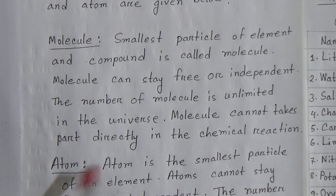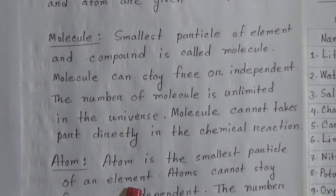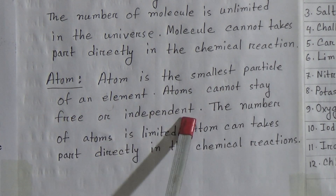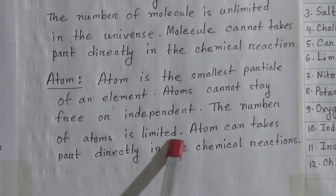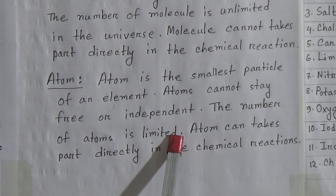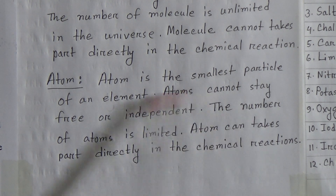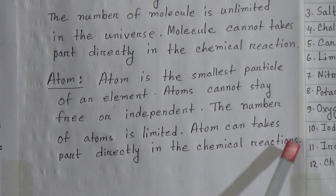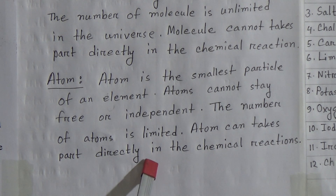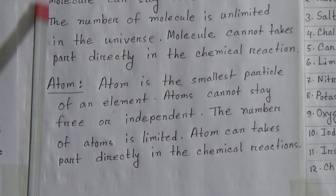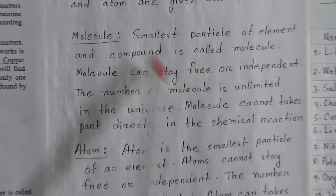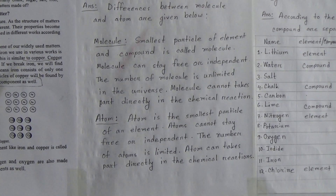For atom: atom is the smallest particle of an element. Atoms cannot stay free or independent. The number of atoms is limited, because elements are limited, so the number of atoms is also limited. Atom can take part directly in the chemical reaction. I have written four lines in the molecule section and four lines in the atom section. You can make a differentiation table with four points for molecule and four points for atom.